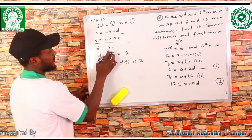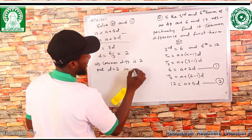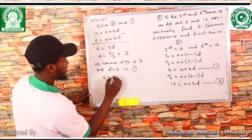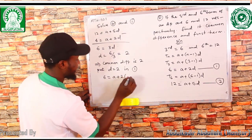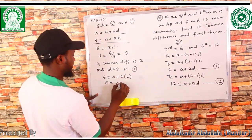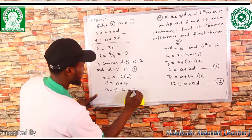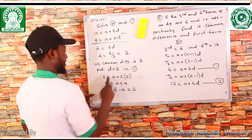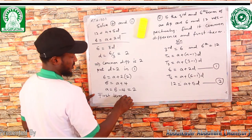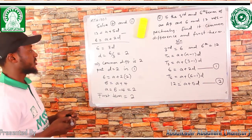To find the first term, substitute D = 2 into equation one: 6 = A + 2(2), so 6 = A + 4, therefore A = 6 - 4 = 2. Hence the first term is also two. So the common difference is two and the first term is two.